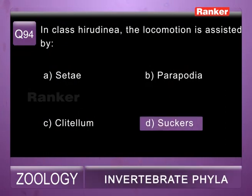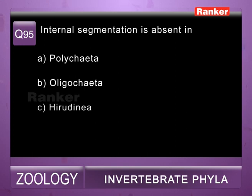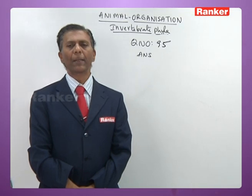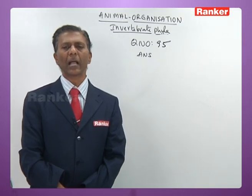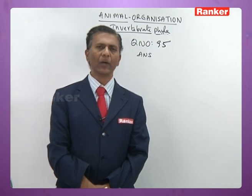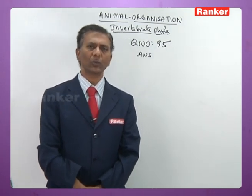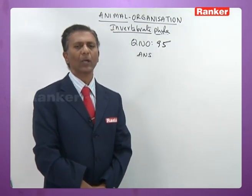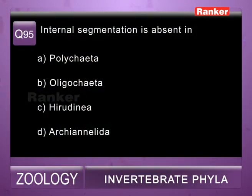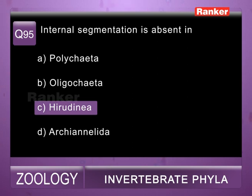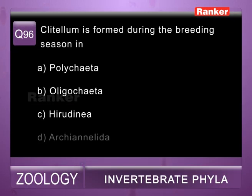Question ninety-five: internal segmentation is absent in — a) Polychaeta, b) Oligochaeta, c) Hirudinea, d) Archiannelida. Internal segmentation is absent in Hirudinea due to the presence of botryoidal tissue, which causes complete loss of internal segmentation. So ninety-fifth question correct answer is c) Hirudinea.